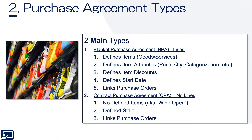If you want different lines — goods, services, quotes, rates, buckets of money — then you want to use a BPA. Those BPA lines can be found by searching through sourcing, much like an item or a catalog item. A blanket allows you to define items, item attributes, discounts, a start date, links, and purchase orders. You can also define notifications, maxes and mins for the amount you can spend, and the lines represent the different goods and services. With a contract purchase agreement there are no lines — every requisition you create gets linked to that agreement. It's called wide open. You still have mins and maxes, but not at a line, product, or service level — just globally.